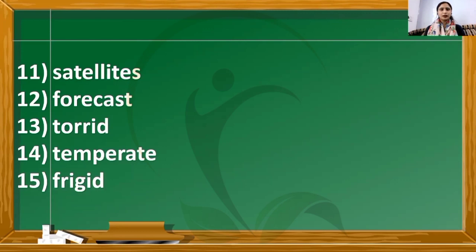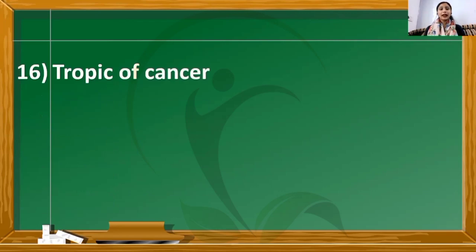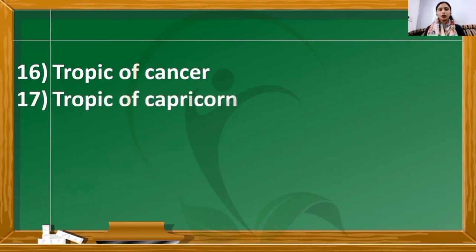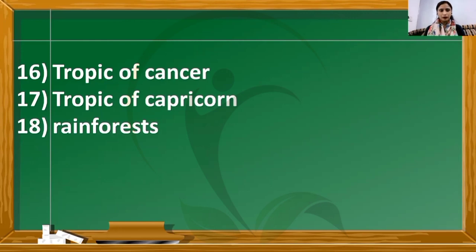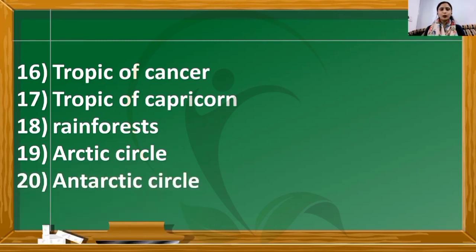Fifteenth: frigid, F-R-I-G-I-D, frigid. Sixteenth: Tropic of Cancer, T-R-O-P-I-C of C-A-N-C-E-R. Seventeenth: Tropic of Capricorn, C-A-P-R-I-C-O-R-N. Eighteenth: rain forest, R-A-I-N-F-O-R-E-S-T. Nineteenth: Arctic Circle, A-R-C-T-I-C C-I-R-C-L-E. Twentieth: Antarctic Circle, A-N-T-A-R-C-T-I-C C-I-R-C-L-E. I hope you are done with these 20 new words.